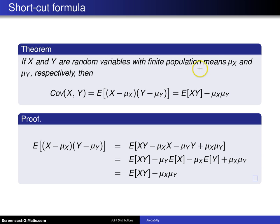With finite populations means μ_X and μ_Y respectively, then the covariance of X and Y, which is given by the defining formula, the expected value of the product of X minus μ_X and Y minus μ_Y, can be calculated as the expected value of XY minus the mean of X times the mean of Y.